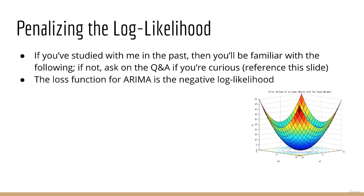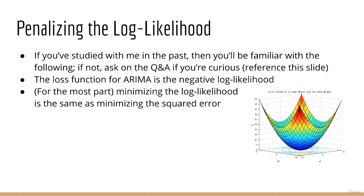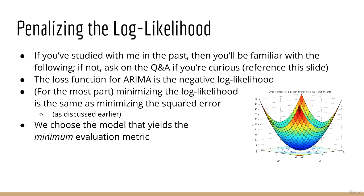It turns out that the loss function when we optimize these ARIMA models is the negative log likelihood. It also turns out that, for the most part, minimizing the negative log likelihood is equivalent to minimizing the squared error. So this doesn't contradict anything I said earlier about minimizing the squared error of the predictions. The log likelihood is more general, however, since it can account for variance.